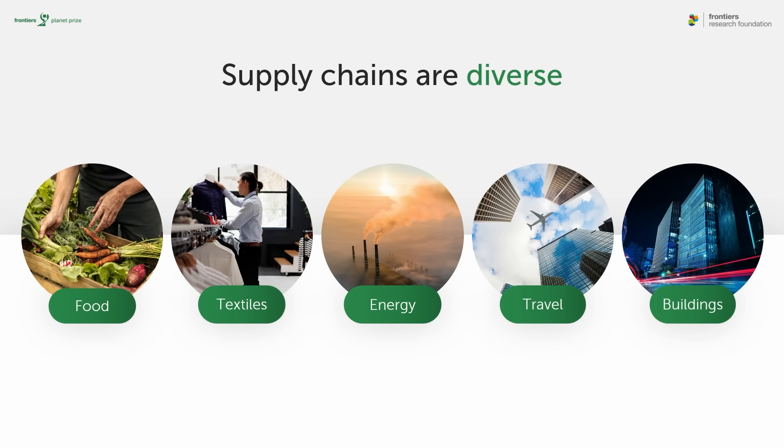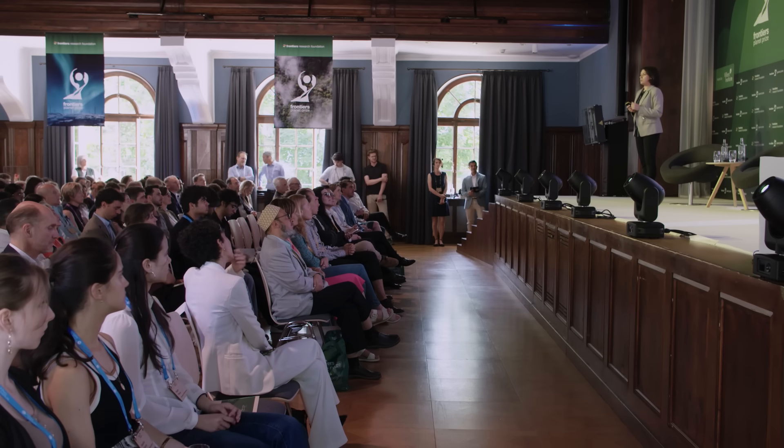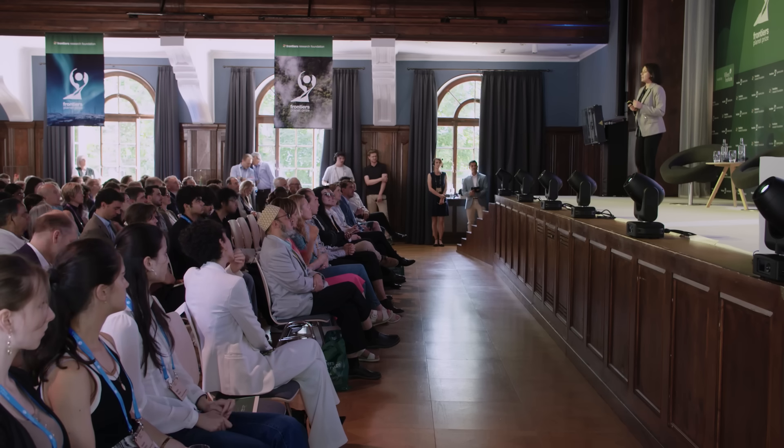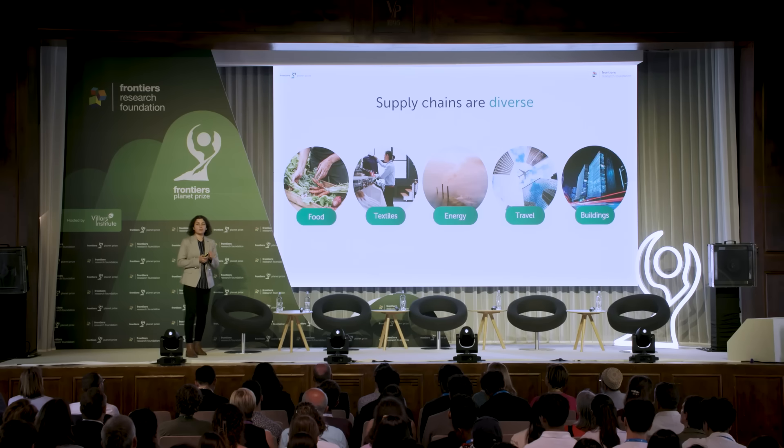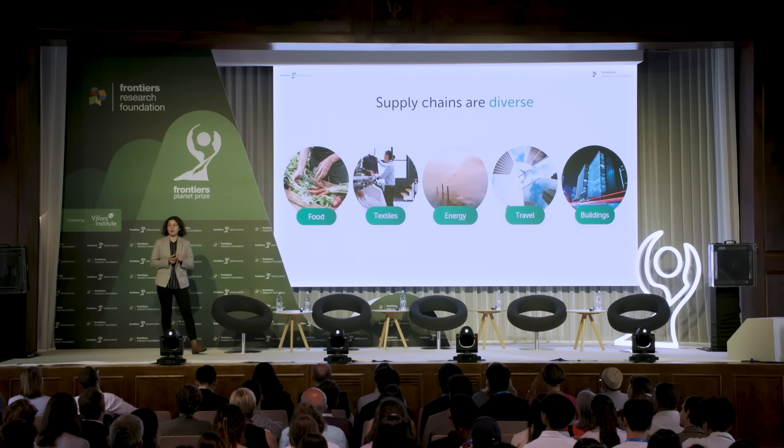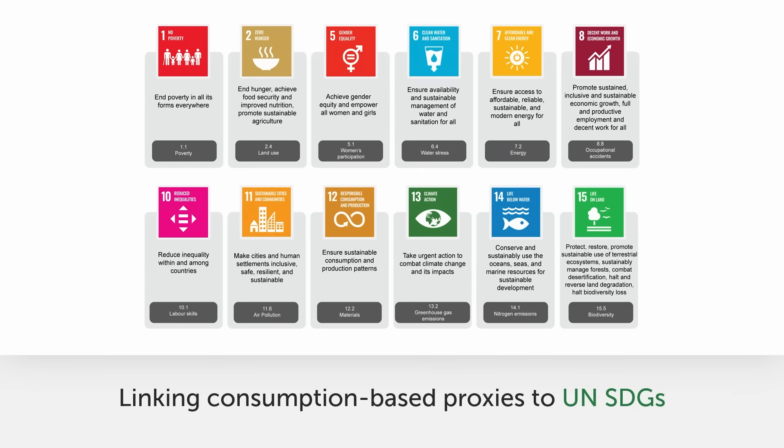Our supply chains are diverse. The food we eat, the clothes we wear, the energy we consume, the travel we do, the buildings we live and work in — they're all part of a complex supply chain network. Those networks don't often originate in the countries we live in; they're very much global. The things we consume are oftentimes produced in borders far, far away, so we need to think about our consumption patterns and where the materials are coming from.